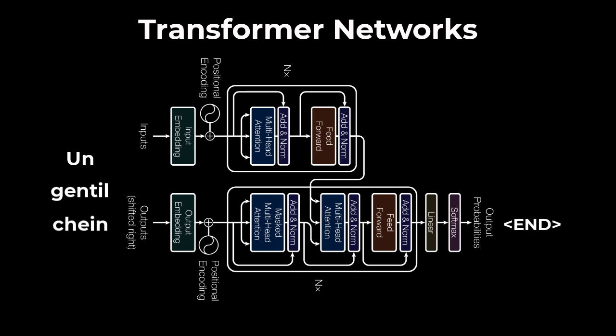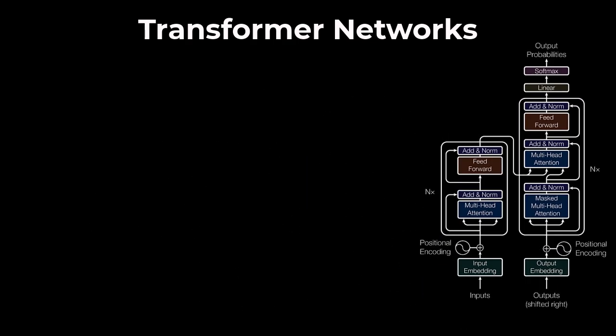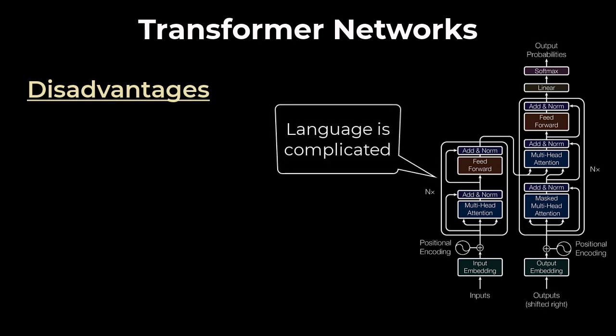Transformers work well for sequence to sequence problems, but for the specific natural language problems like question answering and text summarization, even transformers have drawbacks related to one fact. Language problems are complex.